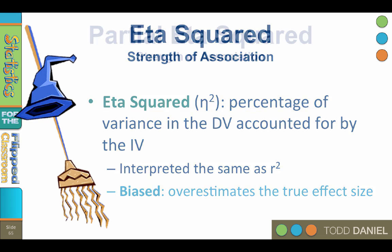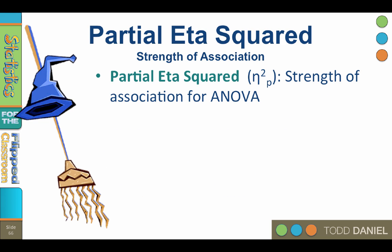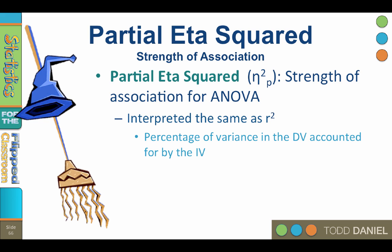Therefore, the strength of association most commonly reported for an ANOVA is a partial eta squared. Partial eta squared is interpreted the same as R squared — it is still the percentage of variance in the dependent variable accounted for by the independent variable. However, partial eta squared is an unbiased correction to eta squared.